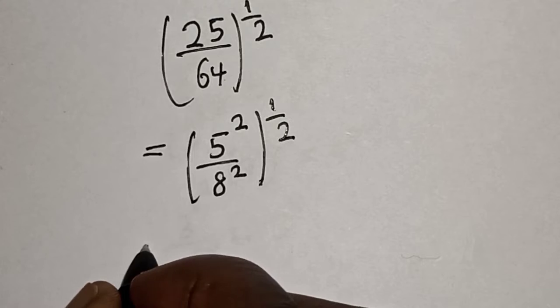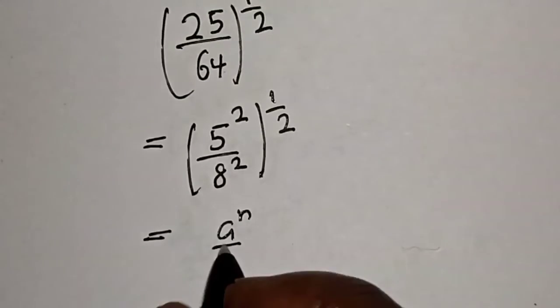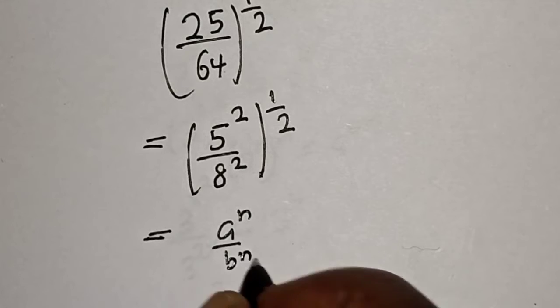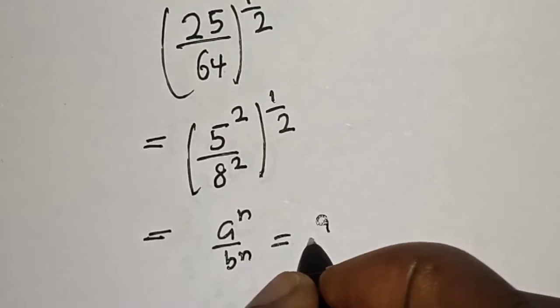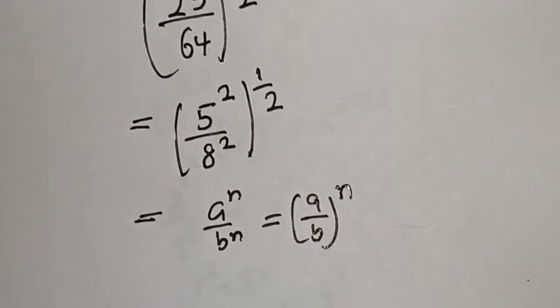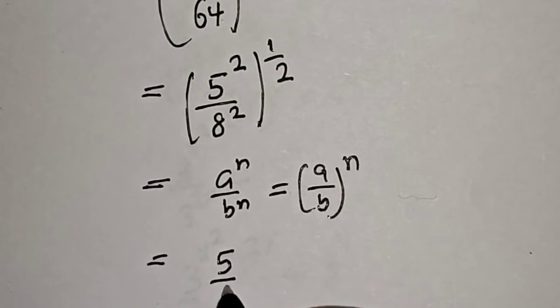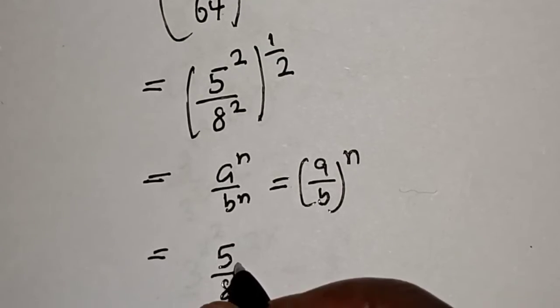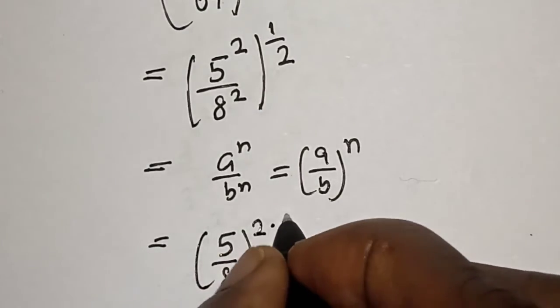Now take note of this rule: a raised to power n over b raised to power n is equal to (a/b) to the power of n. Then this is (5/8) squared, multiplied by 1/2.